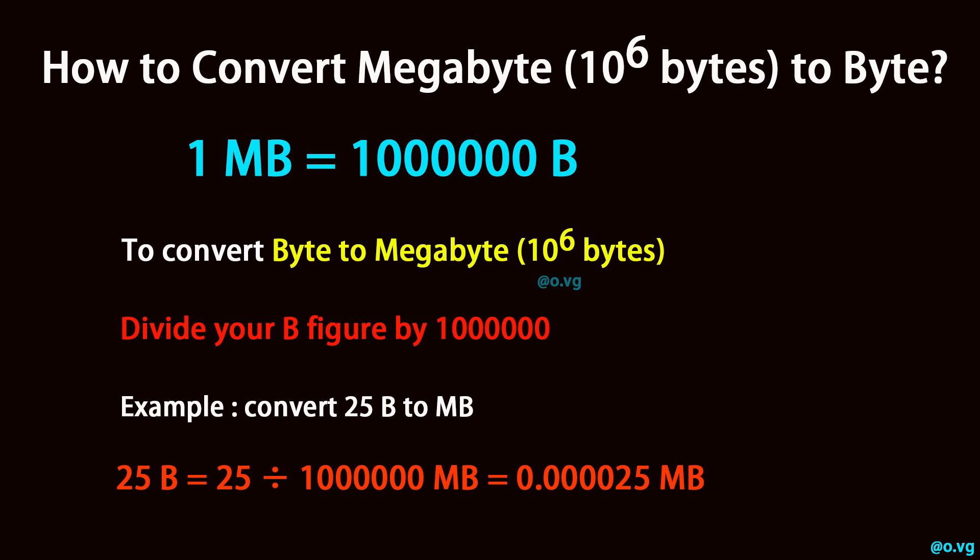Example: convert 25 bytes to megabyte (10^6 bytes). 25 bytes equals 25 divided by one million megabyte (10^6 bytes), which equals 0.000025 megabyte (10^6 bytes).